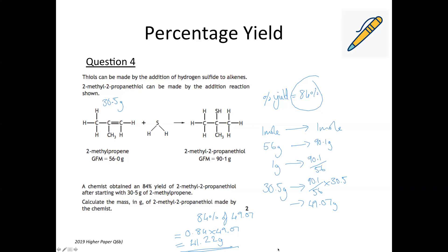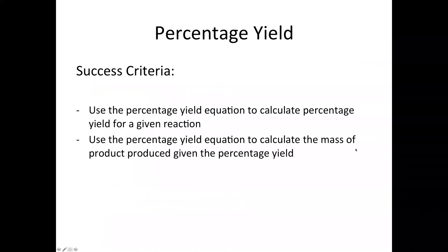So that gives us an actual yield of 41.2 grams. And that's it. So that's four examples from past year questions. Two calculating the percentage yield, and two calculating the yield being given the percentage yield. So hopefully that was helpful, and thank you for watching.